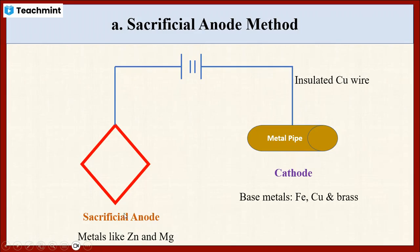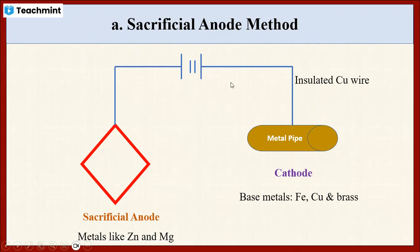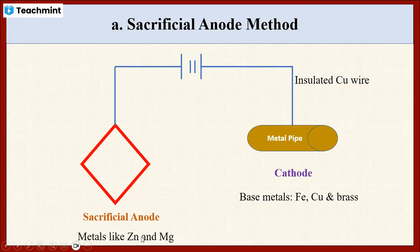At the anode, electrons are donated and corrosion takes place at the anodic region. Overall, during the sacrificial anode method, to protect iron, copper, or brass metal from corrosion, we connect these metals with more active metals like zinc or magnesium using sealed copper wire. The zinc or magnesium metals donate electrons to the cathodic region, some chemical reaction takes place, and the metal is protected from corrosion. The corrosion takes place on the surface of the zinc or magnesium metal, while the iron, copper, or brass metal is protected.